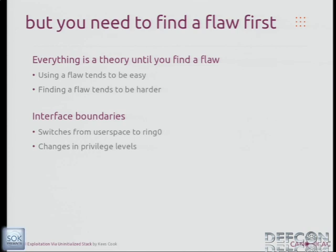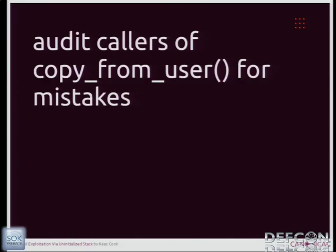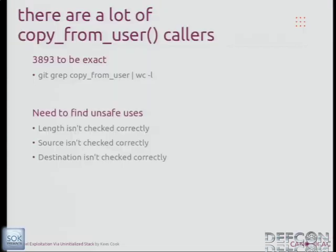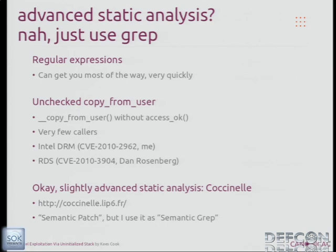All that's unimportant if you don't have a flaw — you obviously need that arbitrary write to begin with. So I started looking at interface boundaries, where things make transitions. I was especially interested in copy_from_user, because that's where you're pulling information from user space and putting it in the kernel — anything that goes wrong there is useful. There are about 4,000 callers, which was daunting. I'm looking for cases where length, source, or destination aren't checked. There's even a version of copy_from_user that performs no access checks at all — very few callers, but one was in Intel DRM and another in RDS.